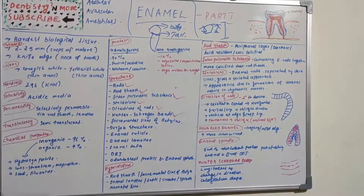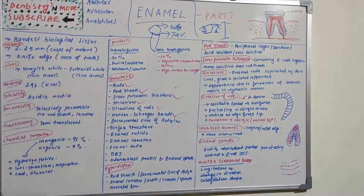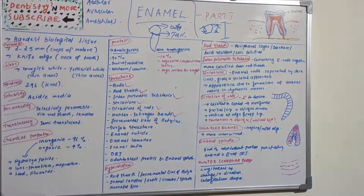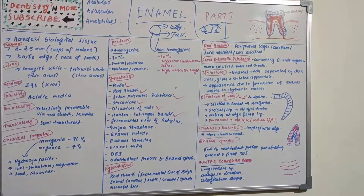Hunter-Schreger bands originate from the DEJ and pass outwards, ending some distance from the outer enamel surface. This may be due to changes in the calcification process — calcification does not happen very regularly and occurs in a rhythmic but variably-frequent manner. This change in calcification process could be the reason for Hunter-Schreger bands.